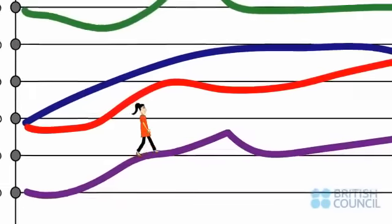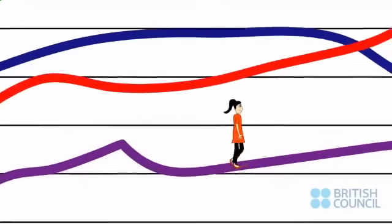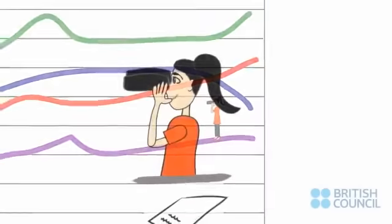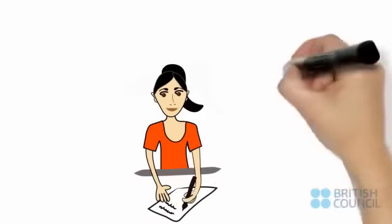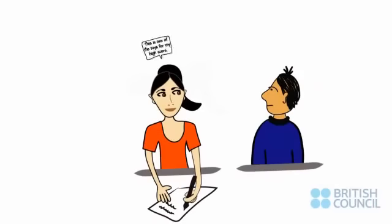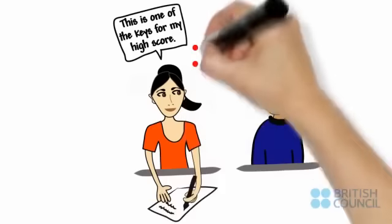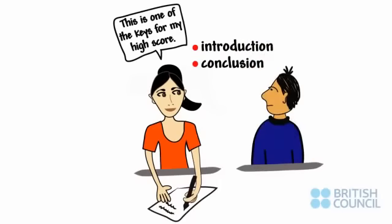It is important to understand the information depicted, so Kaisheng analyzes what she sees. Then she looks for the most significant trends in the diagram. She writes an overview of the information presented, telling You Ching that this is one of the keys for her high score. This can be included in either the introduction or conclusion, and will usually be a couple of sentences.